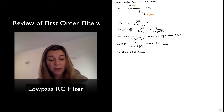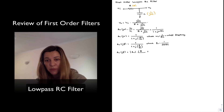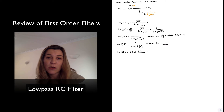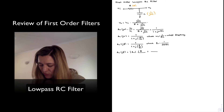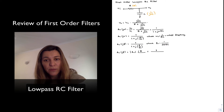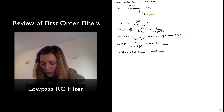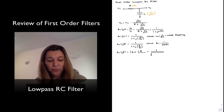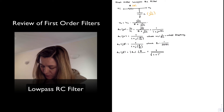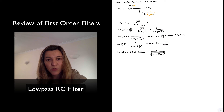Let's calculate the magnitude response and the phase response. The magnitude response is the magnitude of 1 over (1 plus j times f divided by fc). Since there is a ratio, the magnitude equals the magnitude of the numerator divided by the magnitude of the denominator. The numerator is just 1, so its magnitude is 1. The denominator has real part 1 and imaginary part f divided by fc, so its magnitude is the square root of 1 squared plus (f divided by fc) squared — that is, the square root of the sum of real and imaginary parts squared.